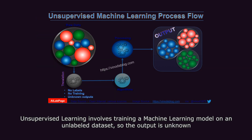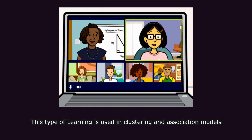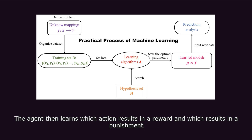Unsupervised learning involves training a machine learning model on an unlabeled dataset, so the output is unknown. This type of learning is used in clustering and association models. Reinforcement learning is where an agent performs specific actions in an environment and receives rewards or punishments for its actions. The agent then learns which actions result in a reward and which result in a punishment.